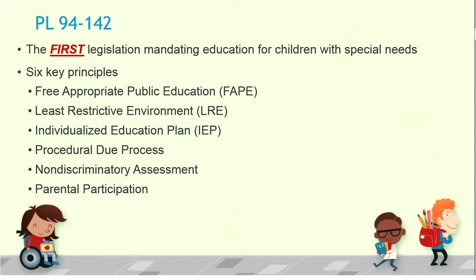A hospital setting would be the most restrictive, and we want to try to put the kid in the least restrictive environment. Each child identified as having a disability covered by IDEA 2004 has the right to an individualized education plan, or IEP, prepared specifically for that child. It takes into consideration present level of performance, long-range goals, short-range objectives, assistive technology, and related services — all written into this very formal, very legal document.